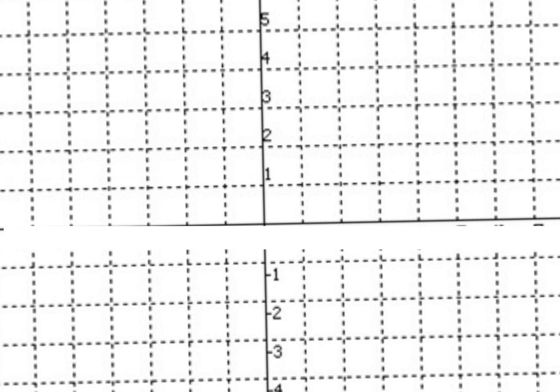We have y equals sine of 3θ. So my amplitude, my amplitude is the number in front of the sine. If I don't see 1, what is it? 1. My period is going to be 2π over the absolute value of 3. 2π over 3.